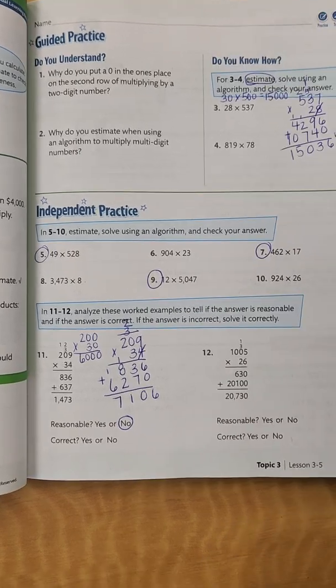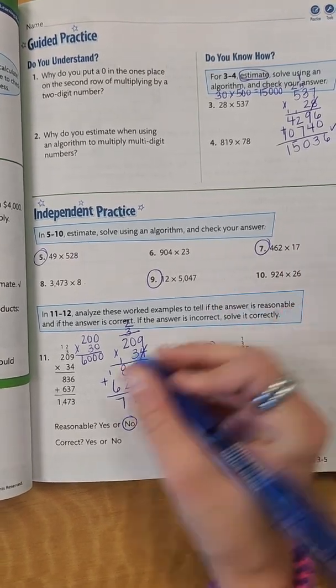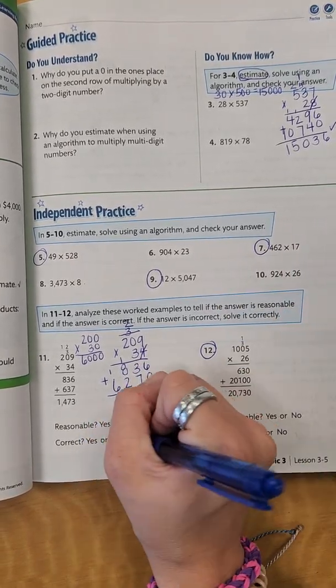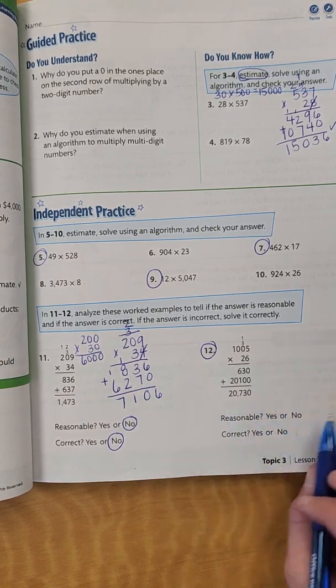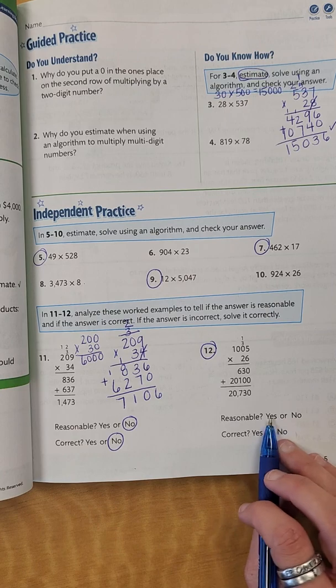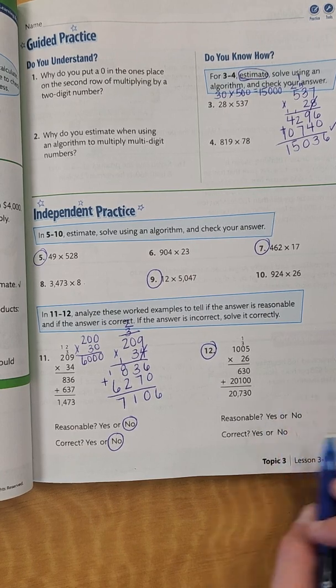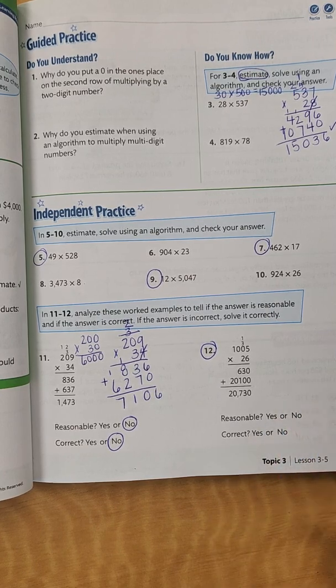So now I want you to do that same thing over here for number 12. So was it correct? We said no, it wasn't correct. Do the same thing. You're going to check, make sure your answer is reasonable. You're going to select yes or no. If it's not reasonable, select no, and then you have to find the actual answer.